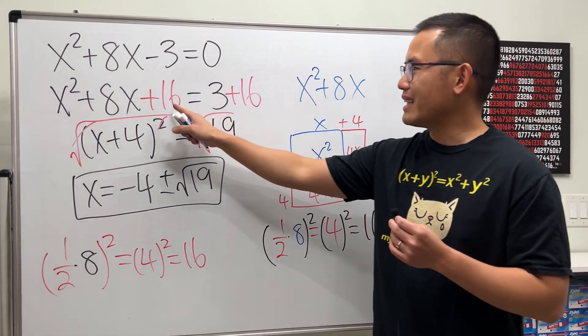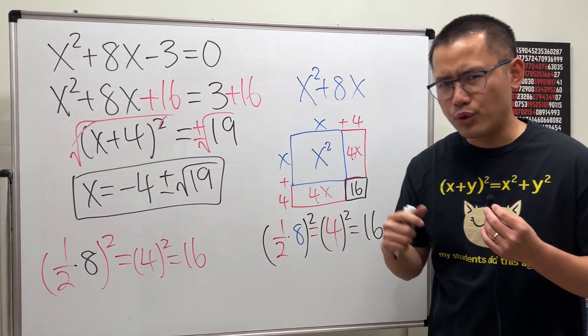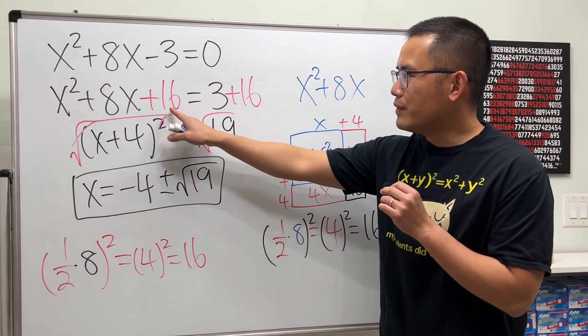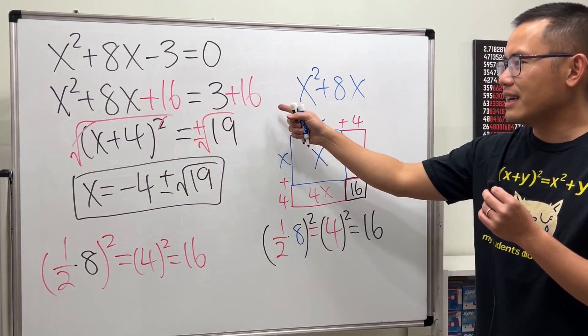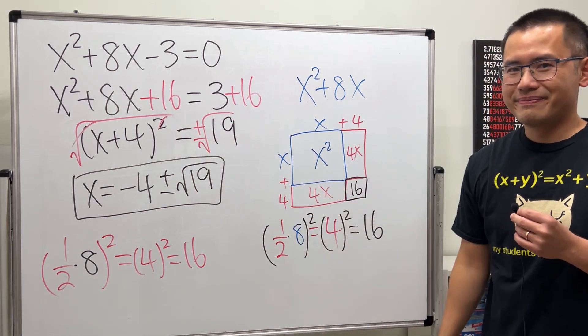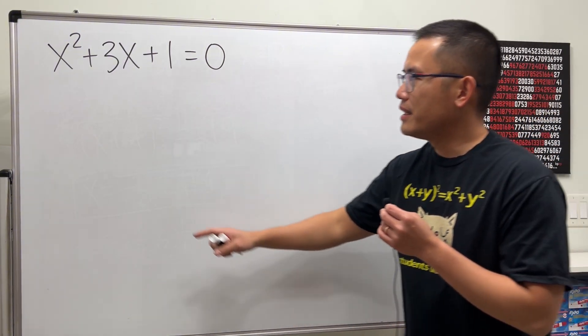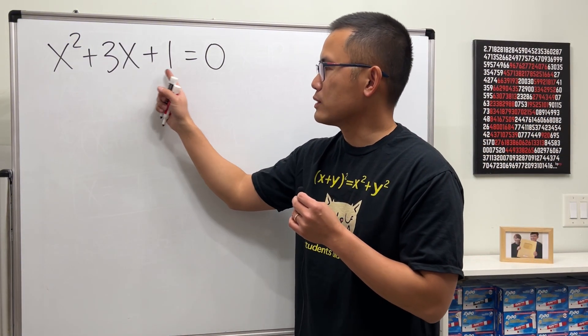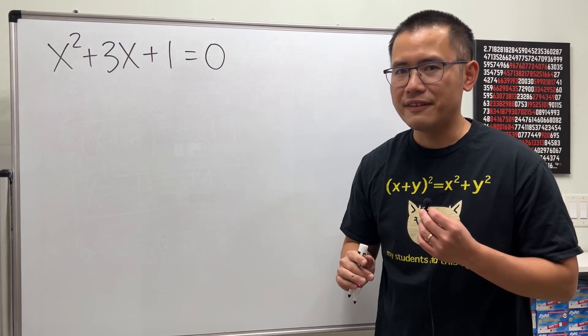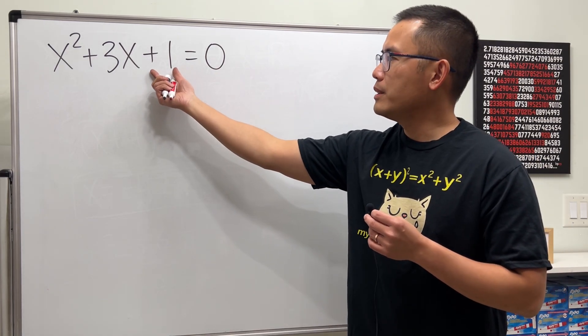That's why we added 16 here. Of course, when you're solving an equation, whatever you do to one side, you do it to the other side as well. That's how it works. Let's try another question. We have x² + 3x + 1 = 0. Again, it's not factorable.